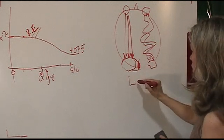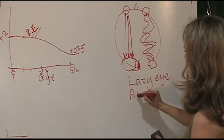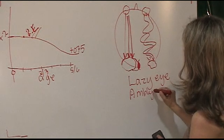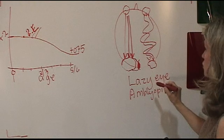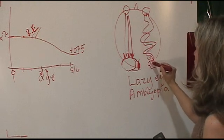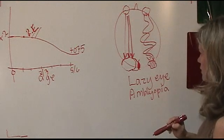And instead of this nice good cortex here, you get this little tiny visual cortex. This is called lazy eye or amblyopia. So it's kind of a bad term. It has nothing to do with the eye looking funny or looking strange.